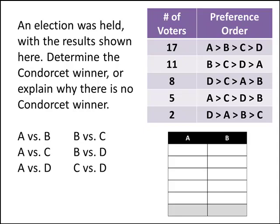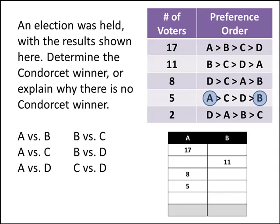Let's look at A versus B. Going down each row of the table, we look at where the A's and B's appear. In the first row, those 17 voters ranked A higher than B, so they would vote for A. In the next row, those voters like B better, so that's 11 votes for B. The next row prefers A over B, then 5 voters vote for A, and 2 more vote for A. Adding up, A gets 32 votes and B gets 11 votes — A wins that matchup.